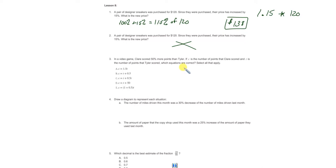In a video game, Claire scored 50% more points than Tyler. If C is the number of points that Claire scored and T is the number of points that Tyler has scored, which equations are correct? So let's make a comparison here between Claire and Tyler. Claire has scored 50% more points than Tyler.